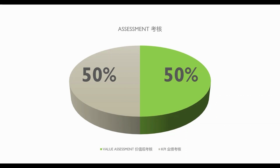In Alibaba Group, they call this kind of person — great capability, achieving KPI, but low in value assessment — a 'wild dog' type. At the end, they will terminate and remove wild dog type people from the company. Even if you achieve your target every month, if your values are totally misaligned with the company's needs, you will not be retained.